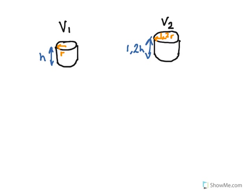Here we have two tins. The volume of tin 1, called V1, we know is 400 milliliters.